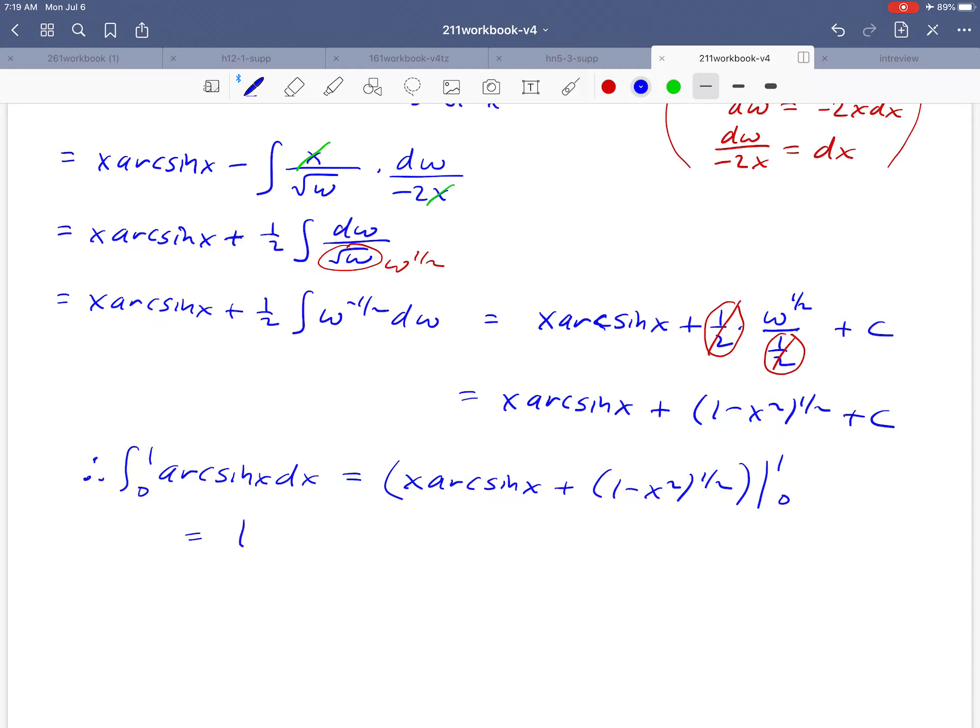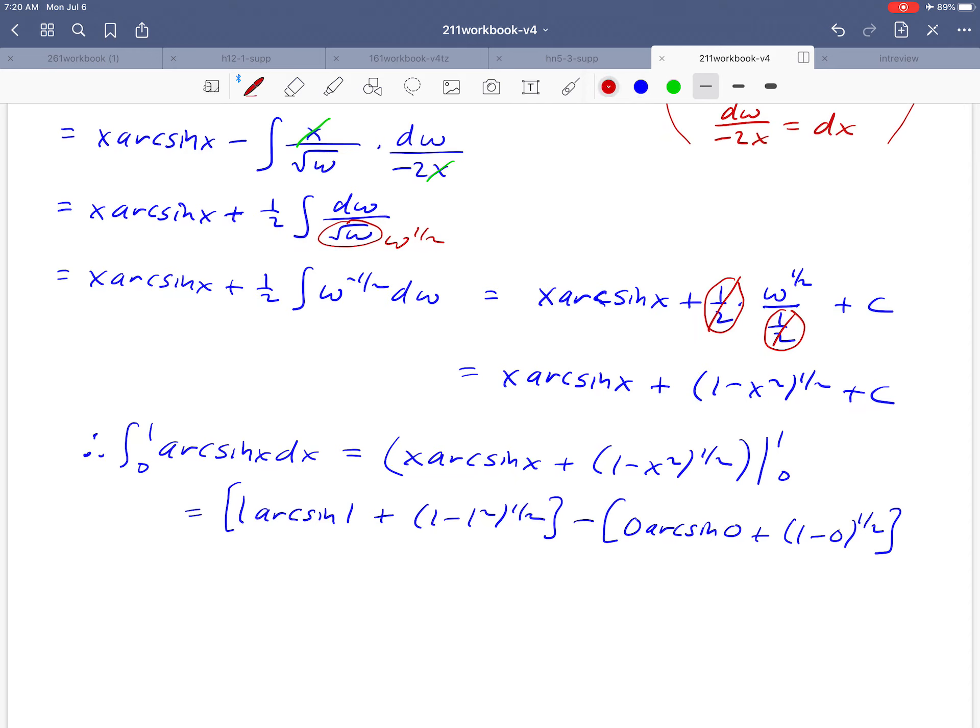And if we do that, plug in the upper limit first, 1 minus 1 squared to the 1 half. And then plug in 0. And what's kind of nice here is that some of the terms go to 0. So 1 minus 1 to the 1 half, that's 0. Arc sine of 0, in your calculator that would look like sine inverse of 0, and you can confirm that that's also equal to 0. So this term goes away. And what we're left with is 1 arc sine of 1. Arc sine of 1 is actually equal to pi over 2. And then over here to the right, 1 minus 0 to the 1 half is just 1. When you do this on your calculator, it may give you a decimal instead of giving you an exact answer. And that's okay, but the upshot of it is pi over 2 minus 1 is the value of our integral.